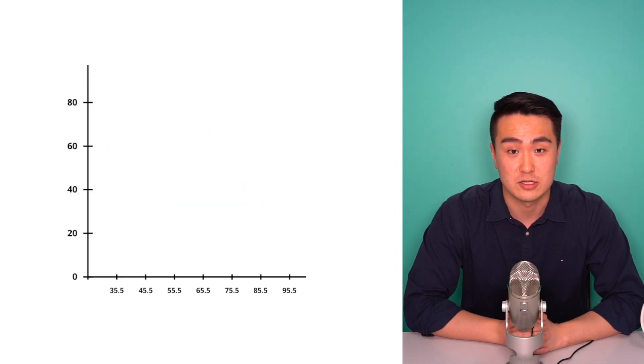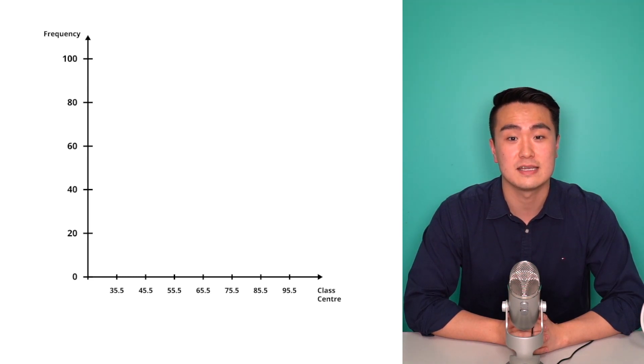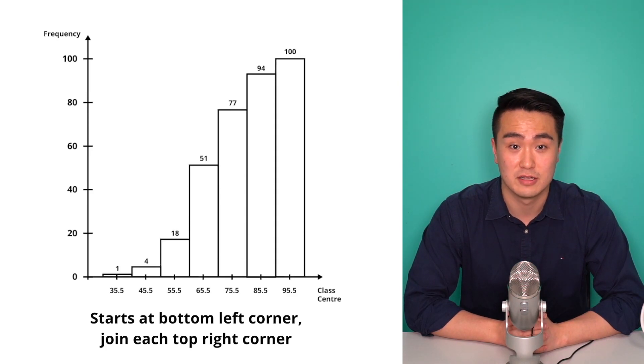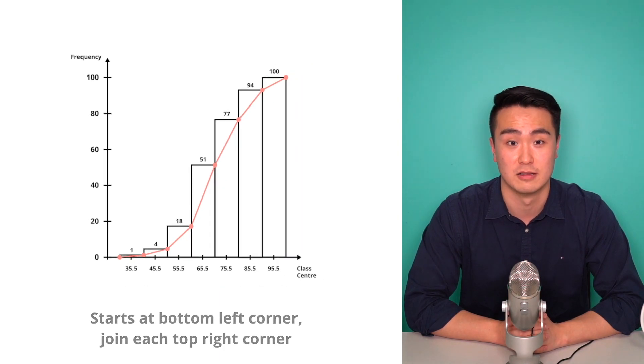To draw a cumulative frequency histogram or polygon, it is the exact same process but using cumulative frequencies instead. The only difference is that the cumulative polygon, aka the ogive, starts at the bottom left corner of the first column, joins each of the top right corners and then ends at the top right corner of the last column.